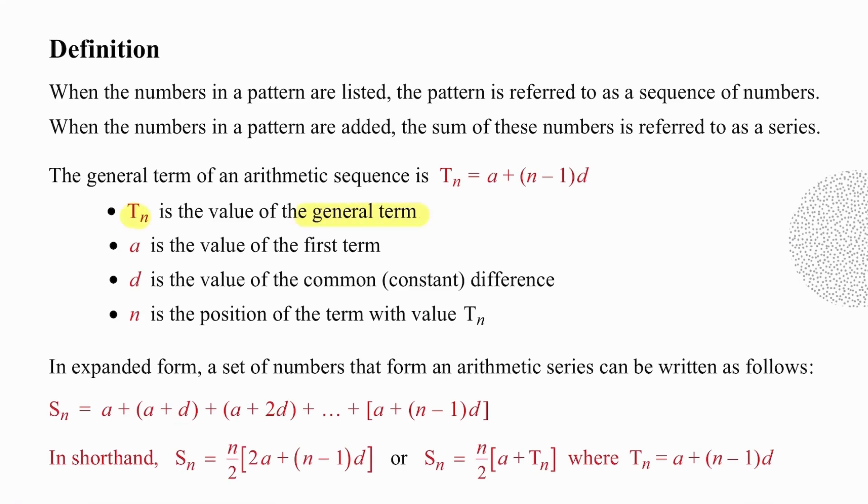T_N still represents the general term. A is the value of the first term, D is the common difference, and N is the position of the term that has a value of T_N. So no changes.